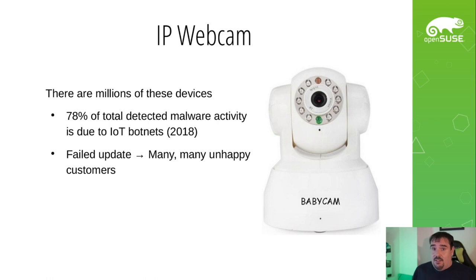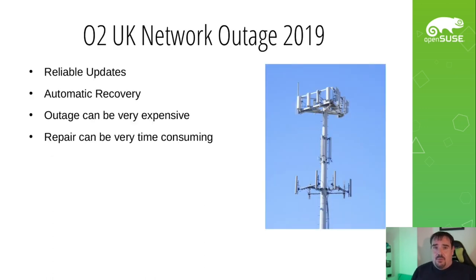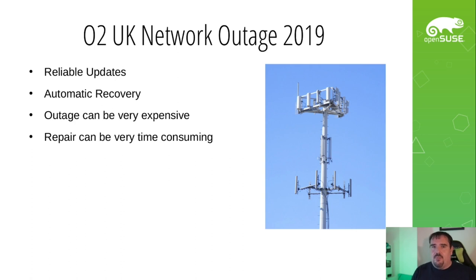Manufacturers are very nervous about updating these devices because a failed update is going to cause many unhappy customers. This isn't just a problem in the tiny IoT device space — in the broader embedded world, you have examples like O2 in the UK, where they have their entire network of cell phone towers across the entire country. In 2019, they rolled out an update to all of these devices that effectively bricked every single one of their cell phone towers and also broke the recovery mechanism for a failed firmware update. The only way of fixing the issue was literally sending engineers out to every single cell phone tower in the country. Meanwhile, no one could get any cell phone access, no data, no 4G. Repair took a really long time and really stressed the need for update mechanisms where rollback and easy recovery are absolutely key.